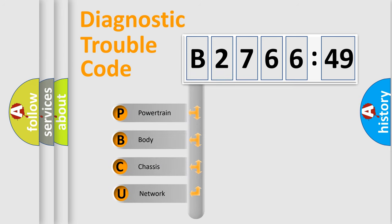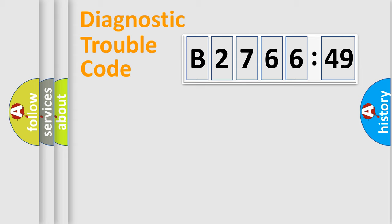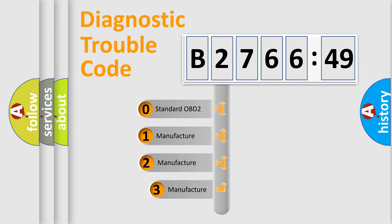First, let's look at the history of diagnostic fault code composition according to the OBD2 protocol, which is unified for all automakers since 2000. We divide the electric system of automobiles into four basic units: Powertrain, Body, Chassis, and Network.